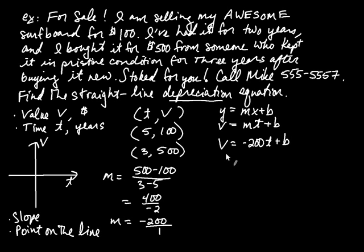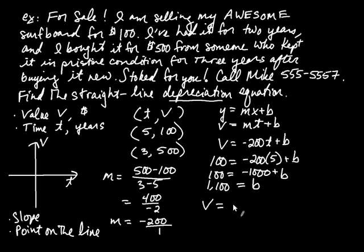So I'm going to replace the V with 100, and I'm going to replace the T with 5. So negative 200 times 5, plus B. So I get 100 is equal to negative 1,000 plus B. And if I add 1,000 to both sides, I get 1,000 plus 100. That is, I get 1,100 is equal to B. So that means my equation is, the value of the board is equal to negative 200 times T plus B, which is 1,100.